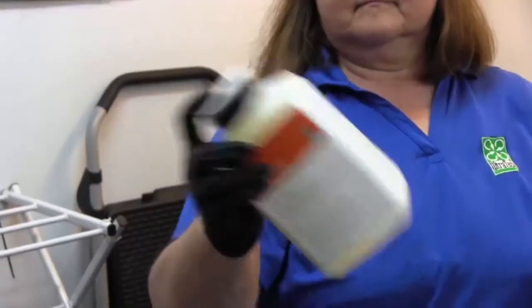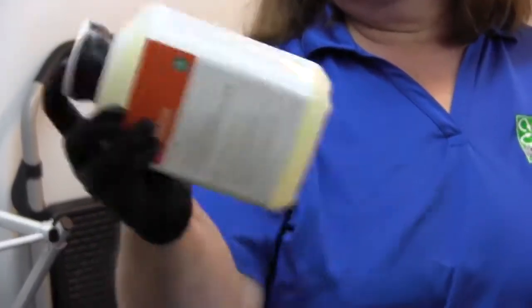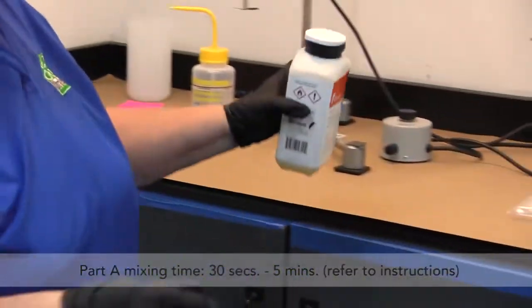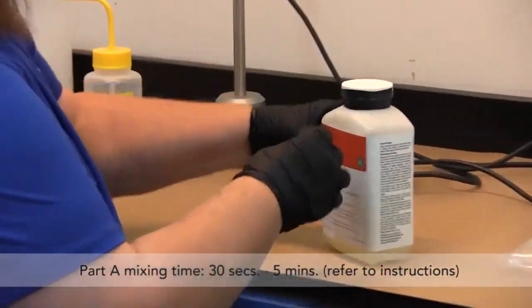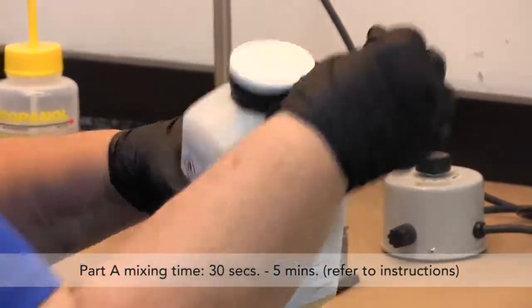In this video, we are showing a smaller quantity of Gentoo being mixed. Refer to written instructions for the proper mixing procedures for larger quantities. Mixing time will range from 30 seconds to 5 minutes depending on the quantity and the size of the container. Please refer to the written instructions for more information.